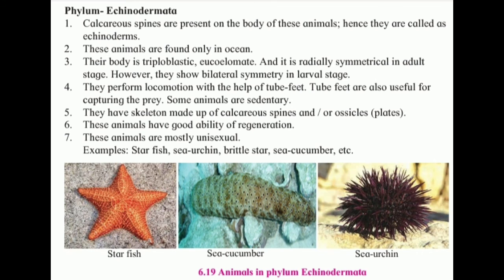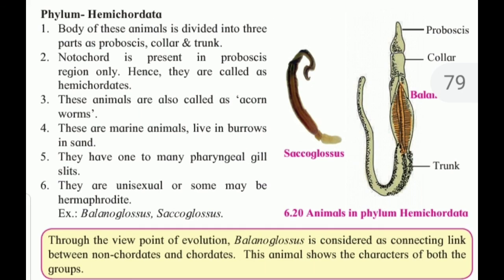These animals have a good ability of regeneration. They are mostly unisexual. Examples include starfish, sea urchin, brittle star, and sea cucumber. In certain situations, starfish can break apart its body parts and regenerate them later on.